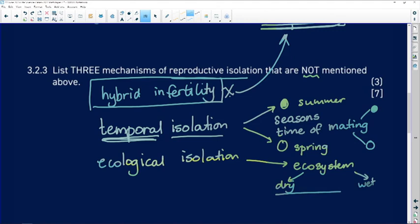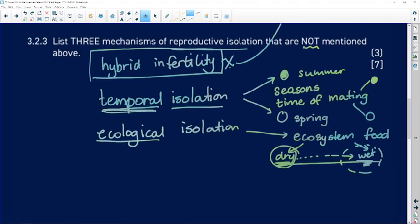We're going to find that the dry ecosystem animals don't like to move into the wet ecosystem. And so maybe it's a case of food differences, that there's different food in the dry area to the wet area. And this is called ecological isolation. They are separated due to what we find in the ecosystems.